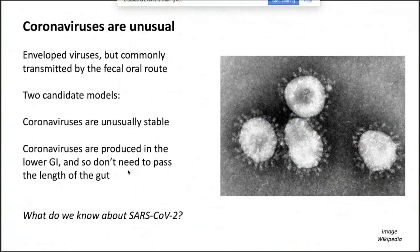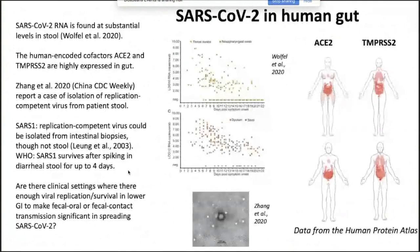So what do we really know about SARS-CoV-2? SARS-CoV-2 RNA is found at substantial levels in stool. In a recent paper in Nature, these are patient samples with time on the x-axis and log-10 RNA concentration on the y-axis for throat swabs, nasopharyngeal sputum, and stool. You can see quite high virus levels in stool in some of these patients.